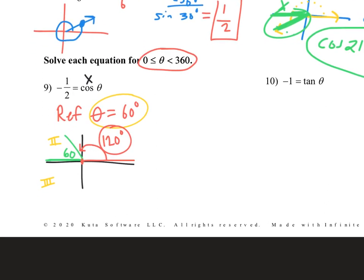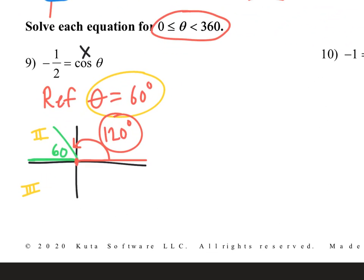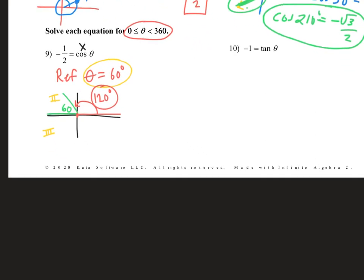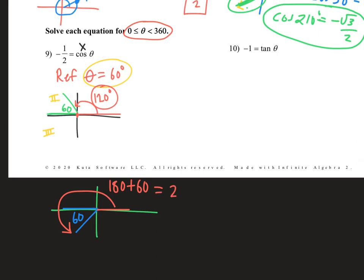And then in quadrant 3 — if we had a 60-degree angle there getting back to 180, but we were 60 degrees past 180 — from there all the way to there would be 180 plus 60, which is 240 degrees. So both of those angles have a reference angle of 60 and in both cases the x-coordinates were negative. That's why we put them in the second and third quadrant. Expect two answers generally for pretty much all of these equations.